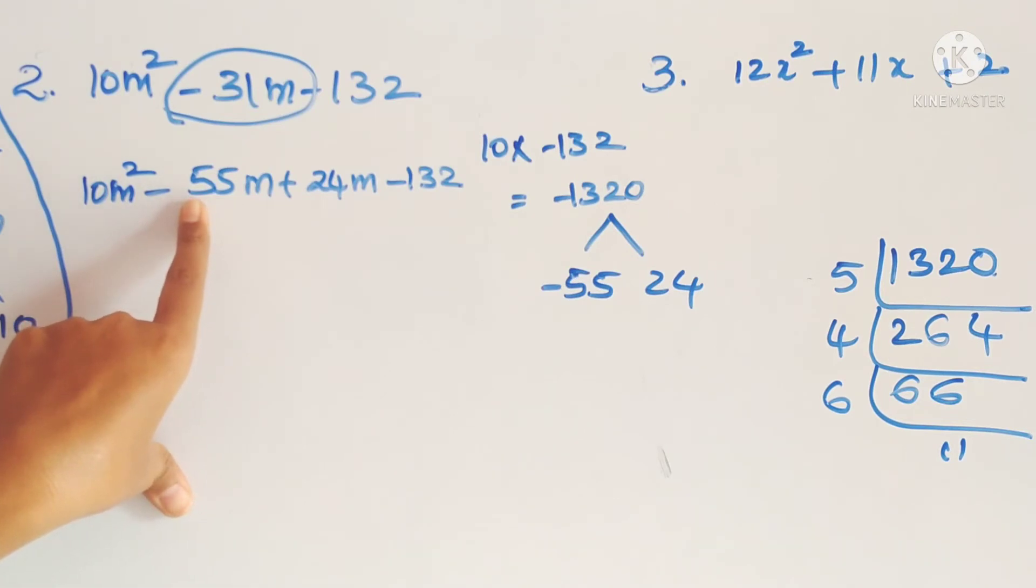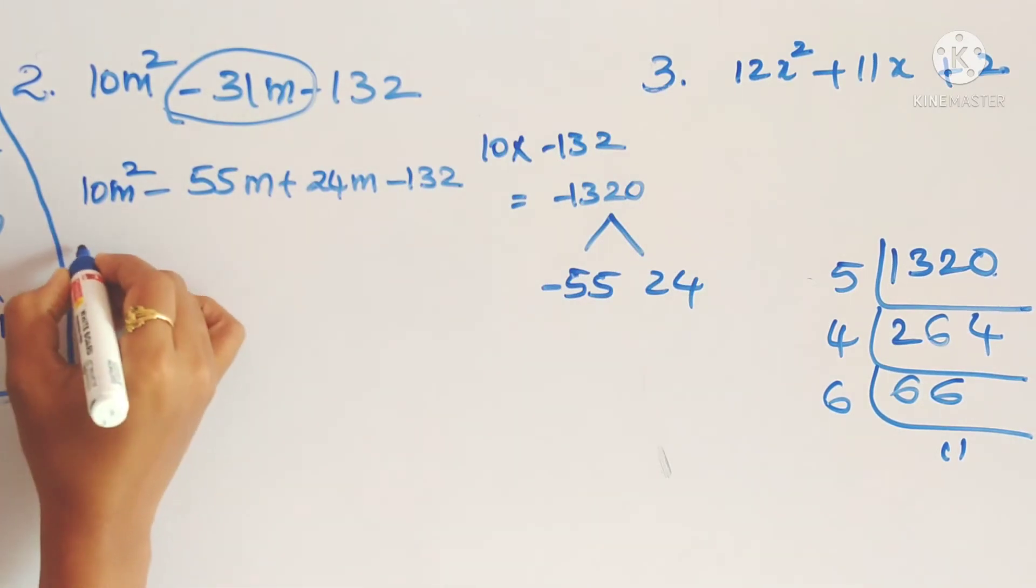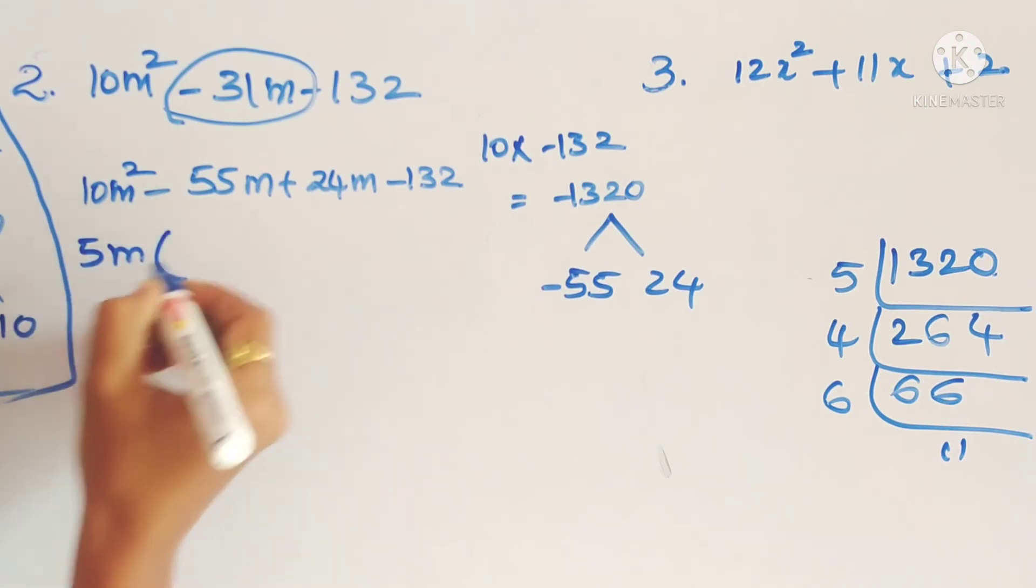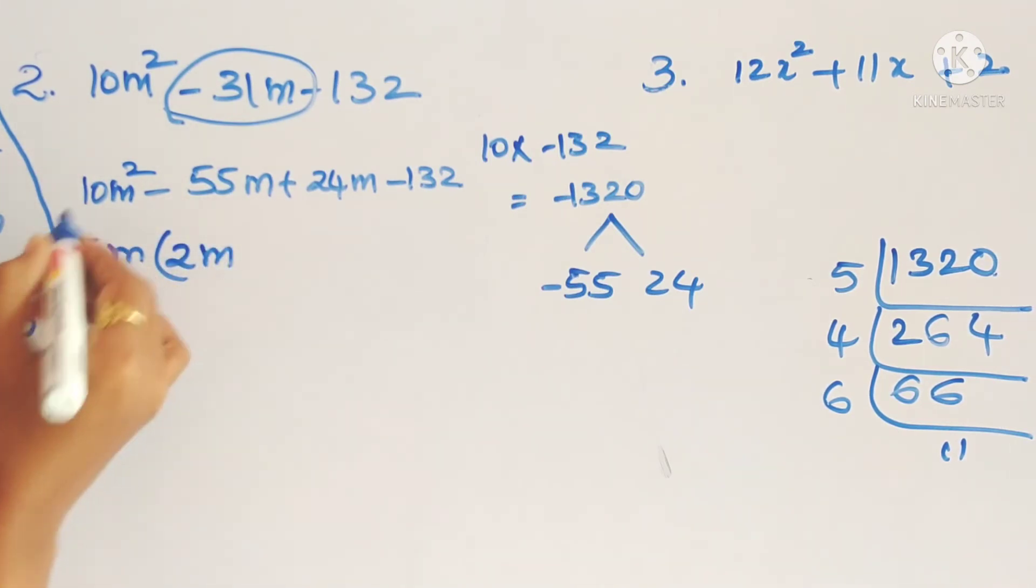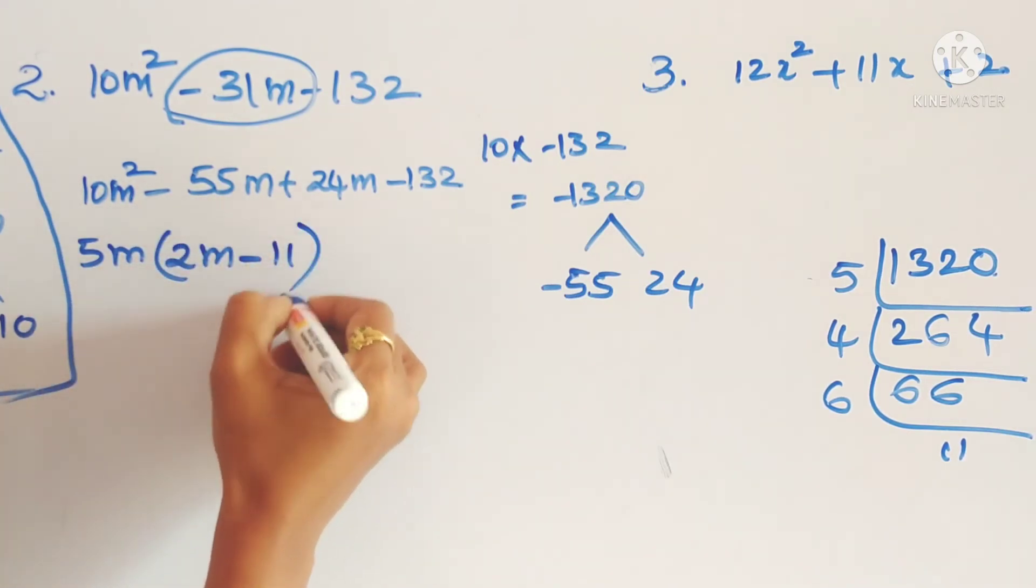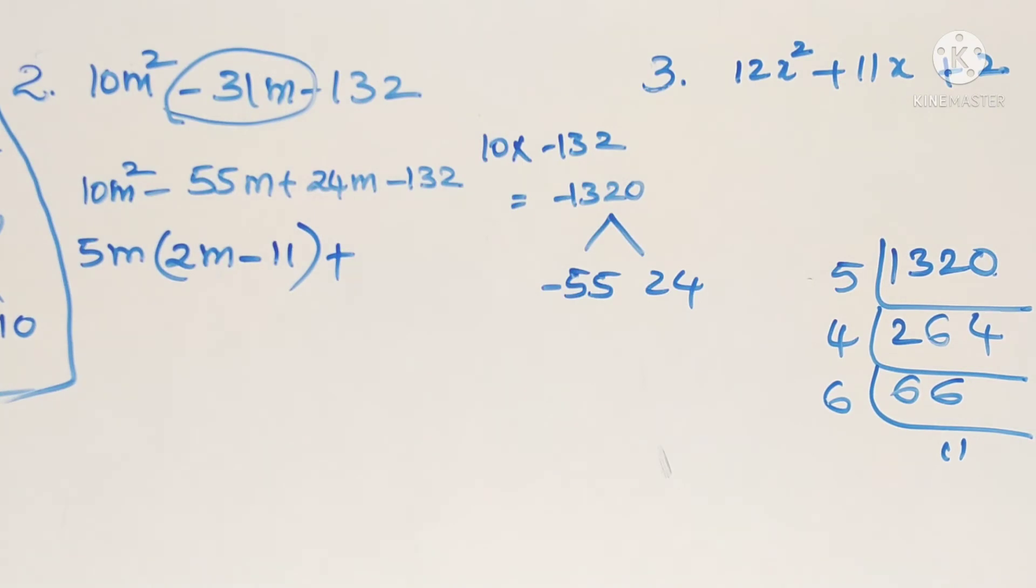See here 10 and 55. 10 and 55's common factors, common factor is 5. So 5m we take as common. Here the remaining is 2m. 5 twos are 10, minus 5 elevens are 55. So this is okay.